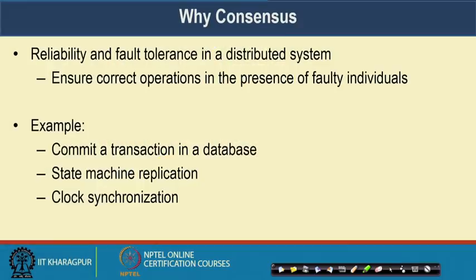Having a common viewpoint in an environment where people can behave maliciously or can crash or work in a faulty way is a difficult thing. Under this kind of distributed environment, our objective is to ensure reliability — that means ensuring correct operations in the presence of faulty individuals. There are multiple examples of consensus in a distributed system; for example, consider a distributed database where transactions are coming in from multiple points of sale, multiple ATMs, and multiple banking sectors — during that time consensus is an important aspect.